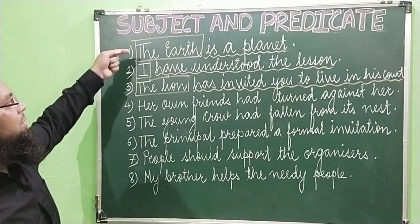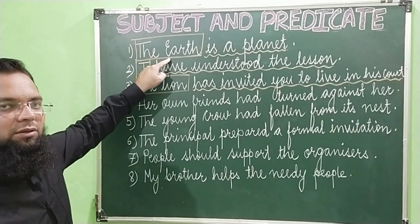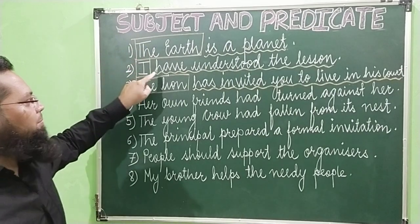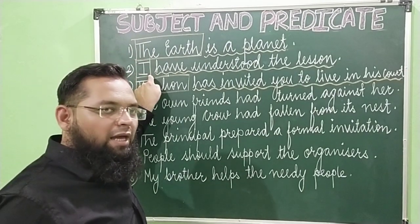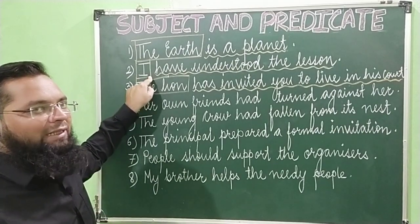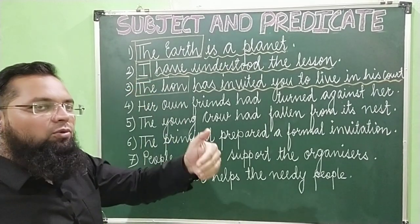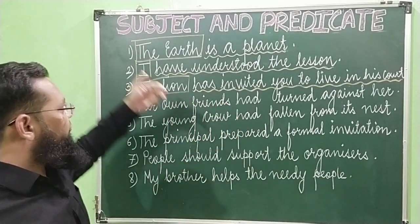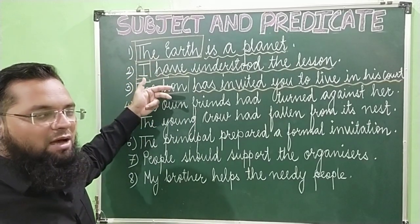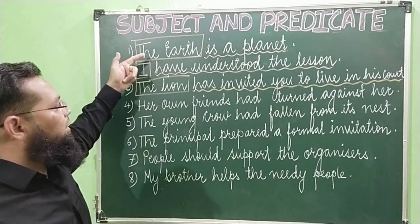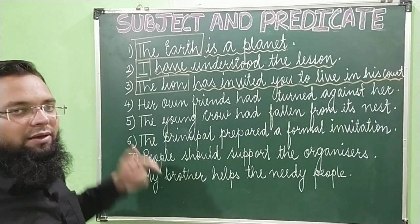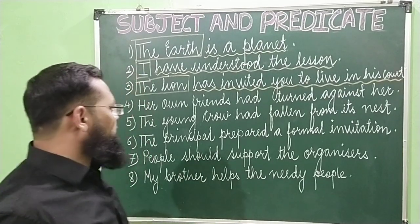In the first example, 'the earth' — what is 'the earth'? It is a noun. In the second example, 'I' — what is 'I'? It is a pronoun. As we discussed, a subject can be a noun, pronoun, or a phrase. In the third sentence, 'the lion' is also a noun. So our subjects are: 'the earth' which is a noun, 'I' which is a pronoun, and 'the lion' which is also a noun.